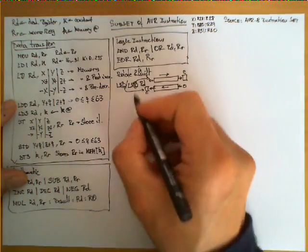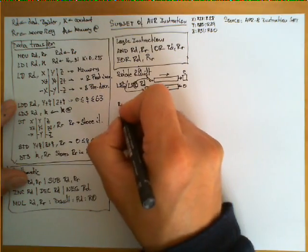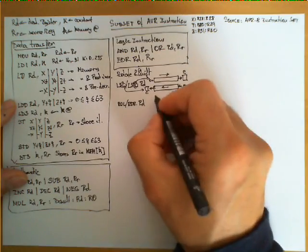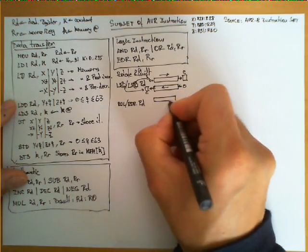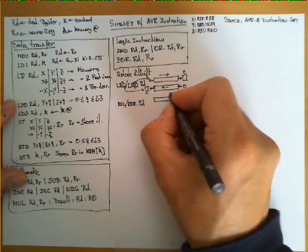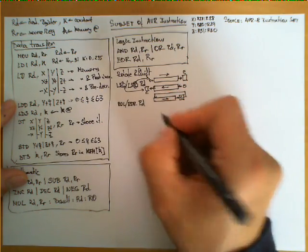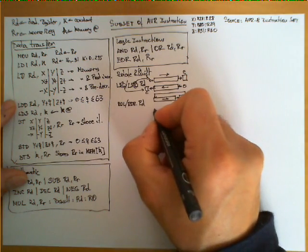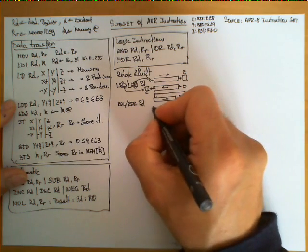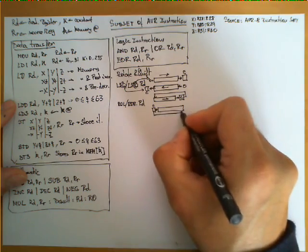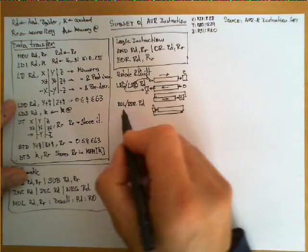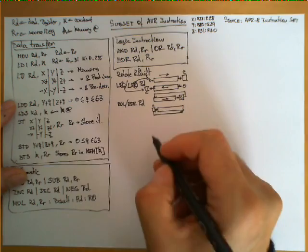Two similar but slightly different instructions are ROL and ROR, again with a single operand RD. In this case, the register is treated as a circular register with the carry flag at the end. For ROR, shifting to the right, the bit in the carry flag enters as the most significant bit, and the least significant bit goes to carry. ROL is analogous in the other direction — together with the carry flag, the register rotates one position.